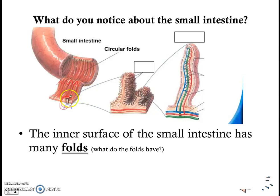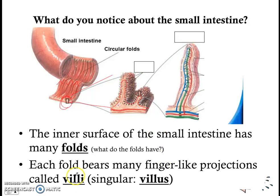Let's zoom in on one of these folds. If you look closely at one of these folds, you might see these little finger-like projections, these little finger-like structures. We call these finger-like projections villi. So each fold bears many finger-like projections called villi — that's the plural. The singular is villus, so many villi and one villus. Now let's zoom in on a villus.